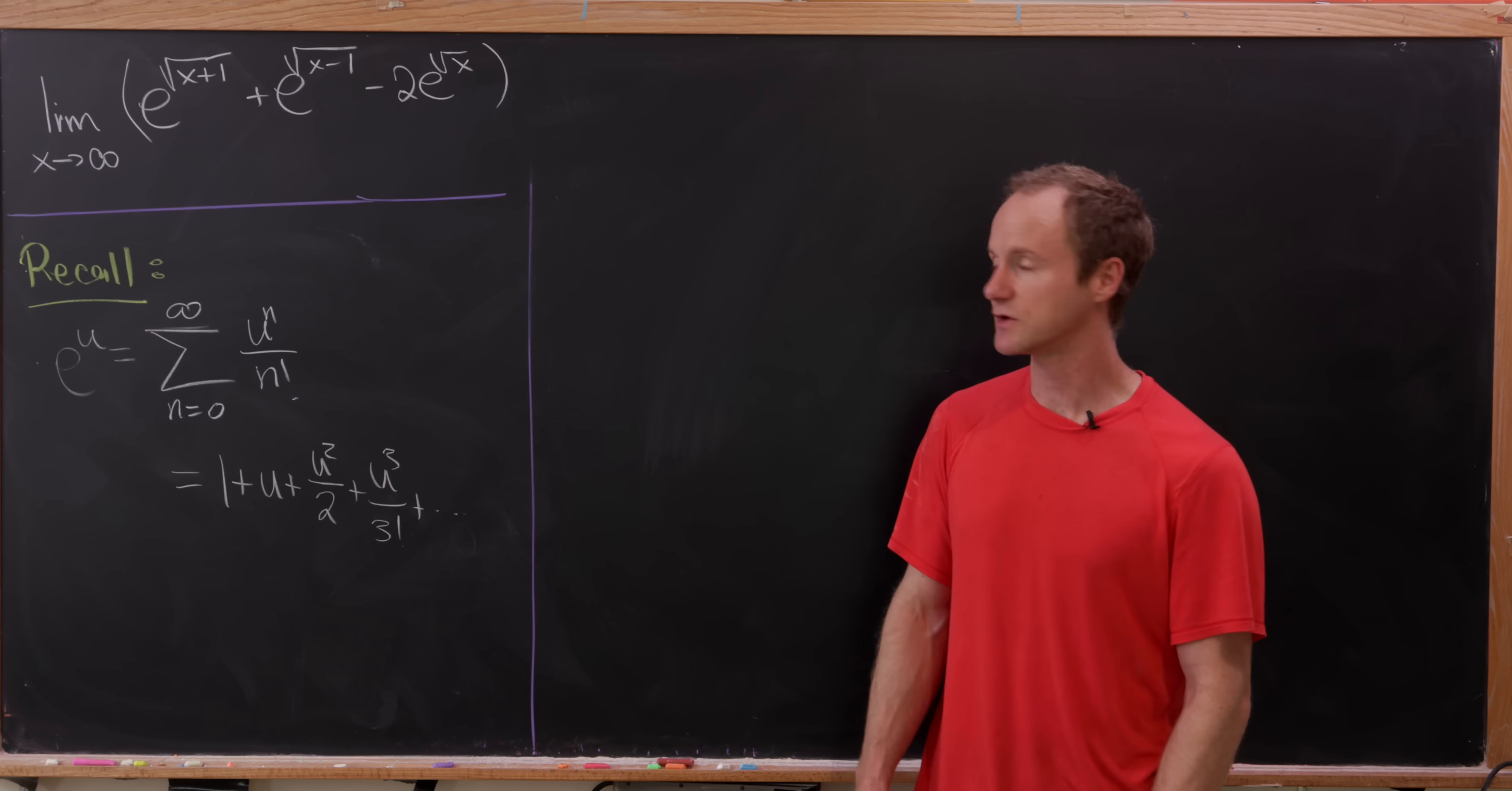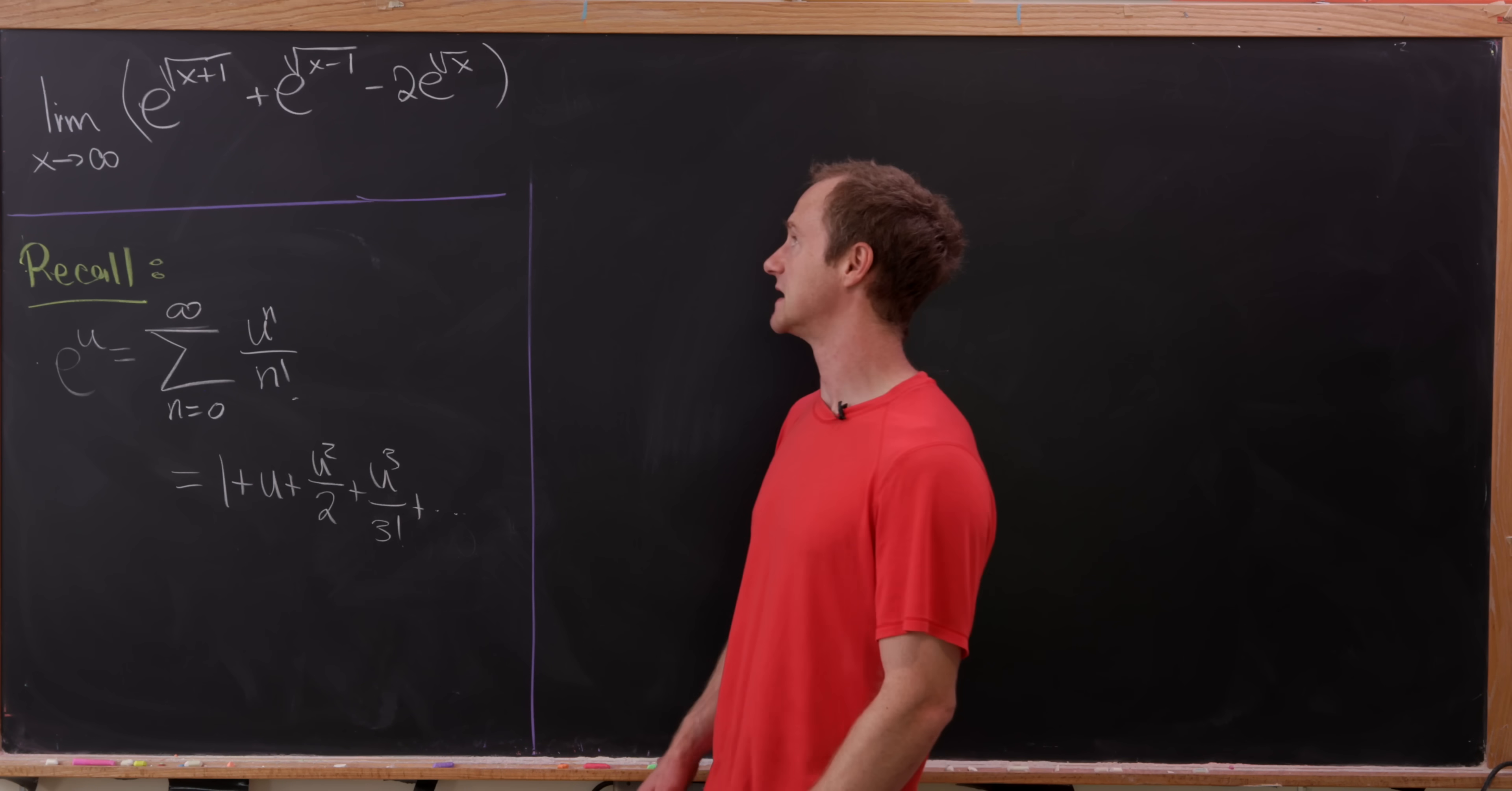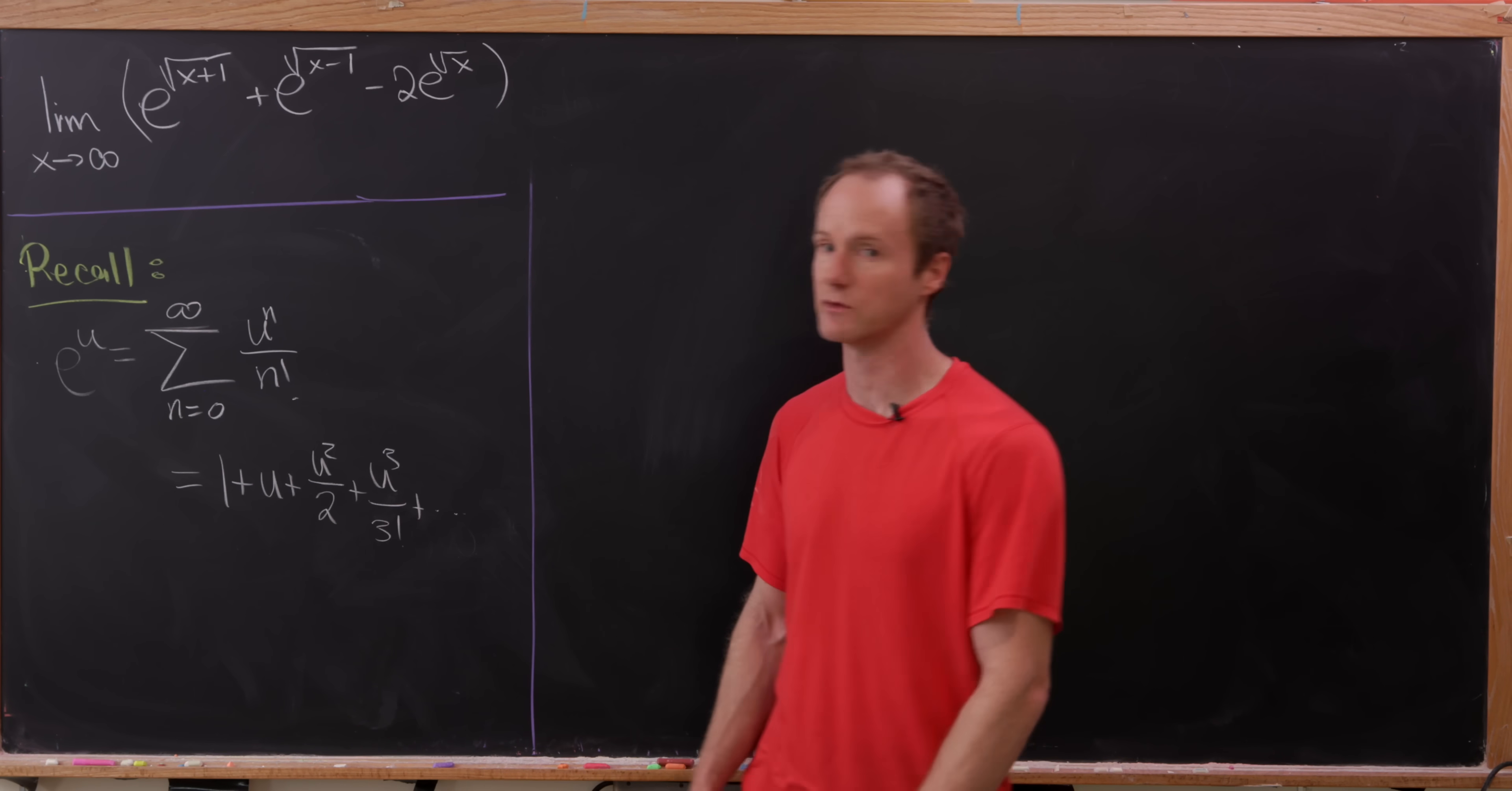Okay, so we've got the limit as x goes to infinity of e to the square root of x plus 1 plus e to the square root of x minus 1 minus 2 times e to the square root of x.